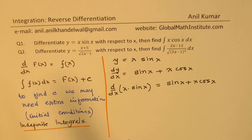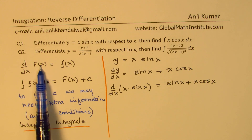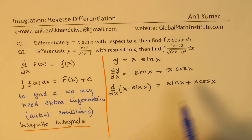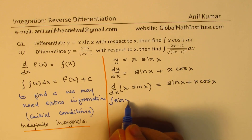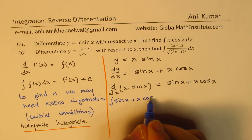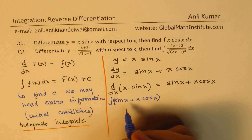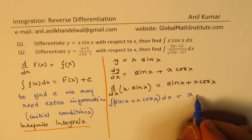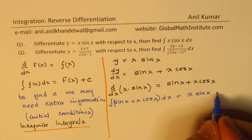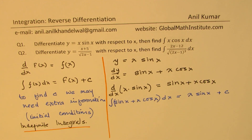From our learnings, that is capital F(x), and we know our function. Now from here we can say that the integral of sin(x) + x·cos(x) dx is equal to x·sin(x) plus some constant C. That is what we get straight from the derivative, and I hope now you understand the type of question being asked.